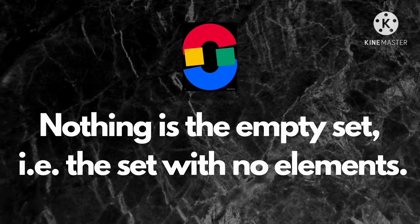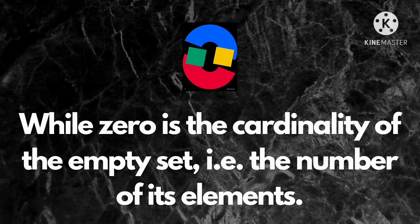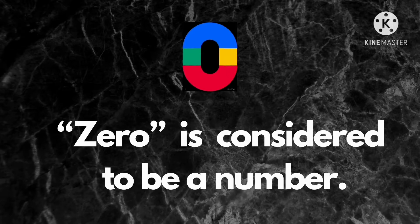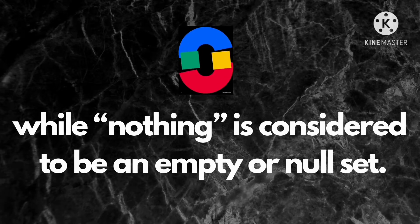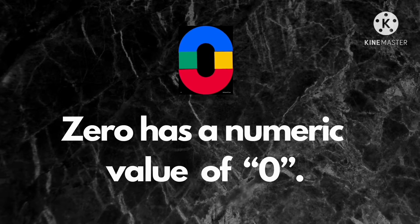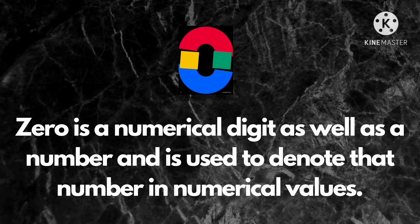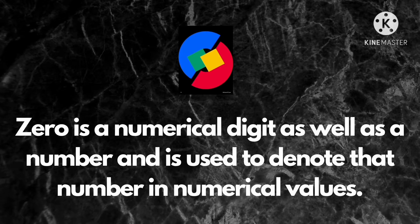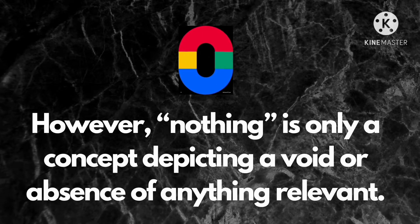Nothing is the empty set — the set with no elements — while zero is the cardinality of the empty set. Zero is considered to be a number, while nothing is considered to be an empty or null set. Zero has a numeric value of zero and is a numerical digit. However, nothing is only a concept depicting a void or absence of anything relevant.